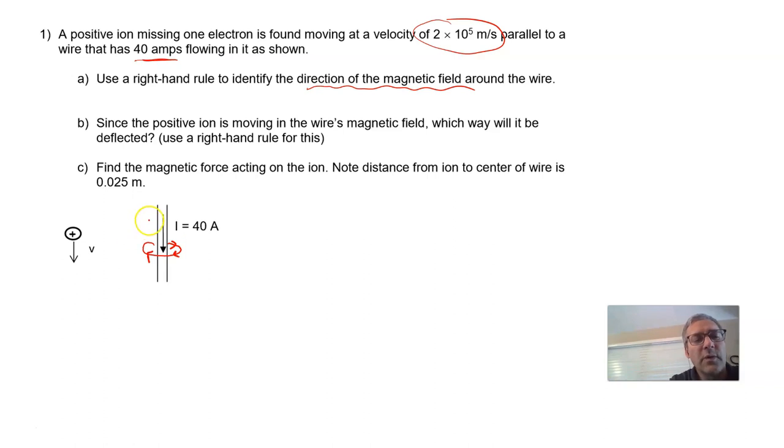And if you go further away from the wire, the magnetic field becomes weaker. So we've got the directions of the field going around.